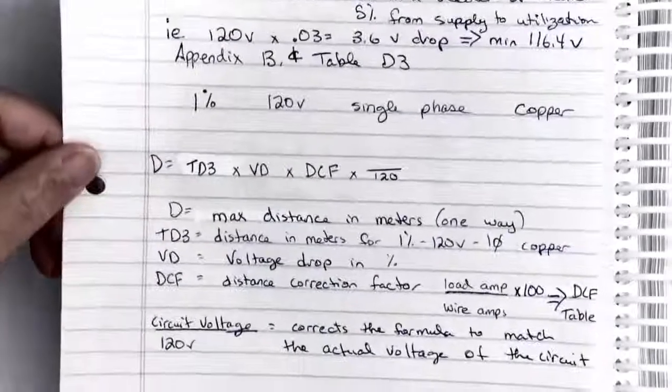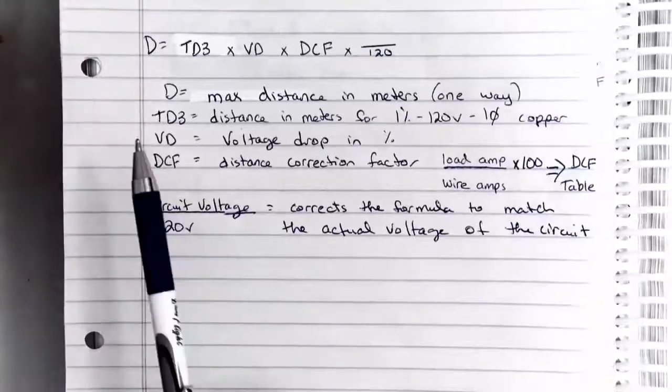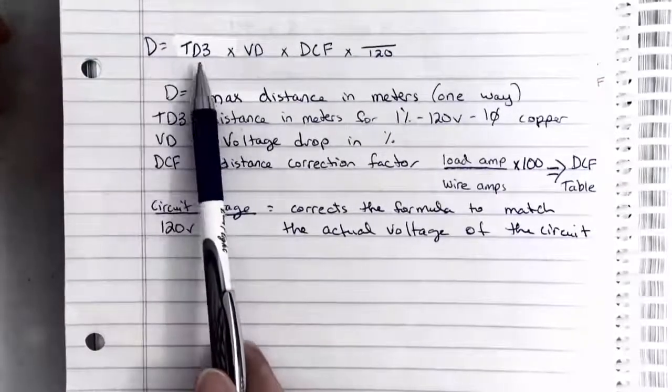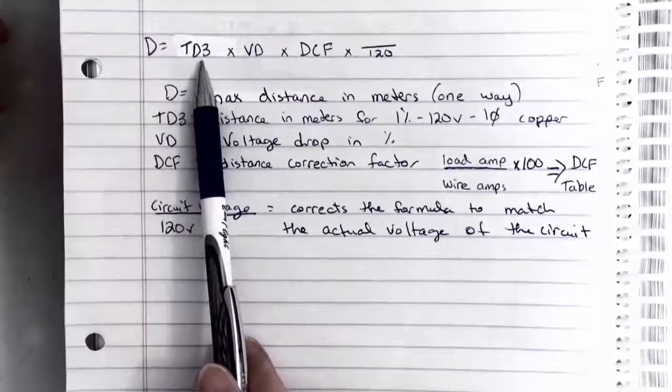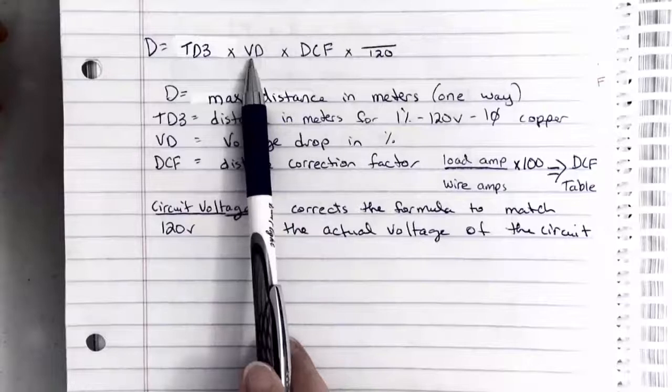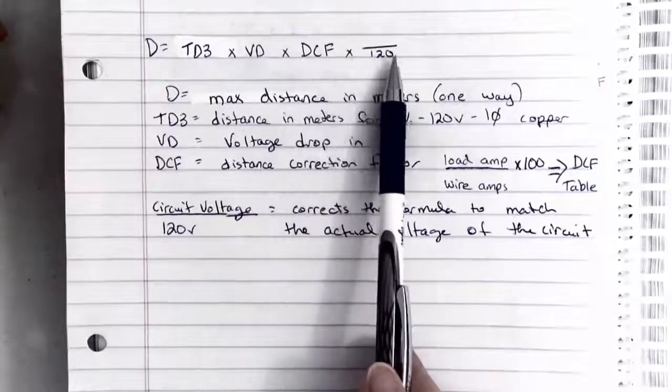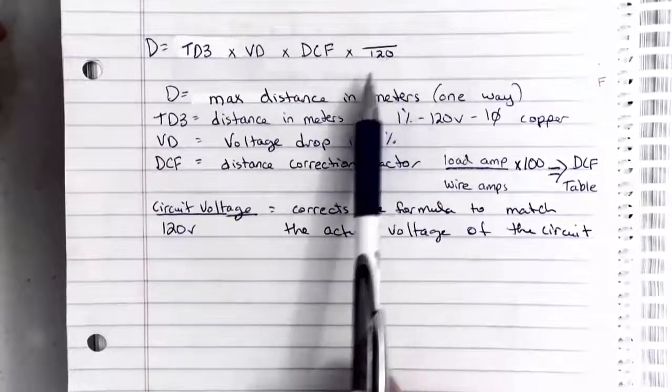So again, if we're looking just at this formula, the distance in meters equals the distance from the table in meters times the voltage drop that we're allowed times the distance correction factor times our actual circuit voltage divided by 120.